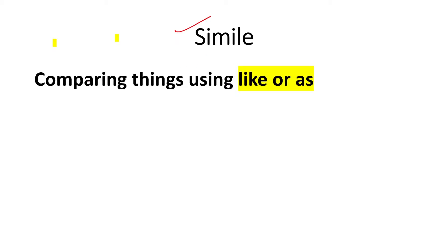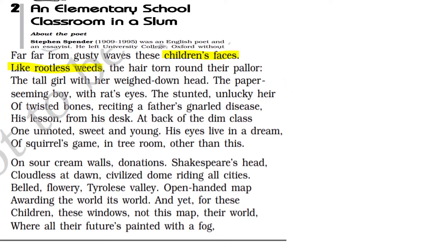Next is simile. Simile means comparing things using 'like' or 'as.' It is a poetic device used to compare two things using the linking word 'like' or 'as.' Look at the line: 'children's faces like rootless beads.' Here the children's faces are compared with rootless beads using the linking word 'like.'